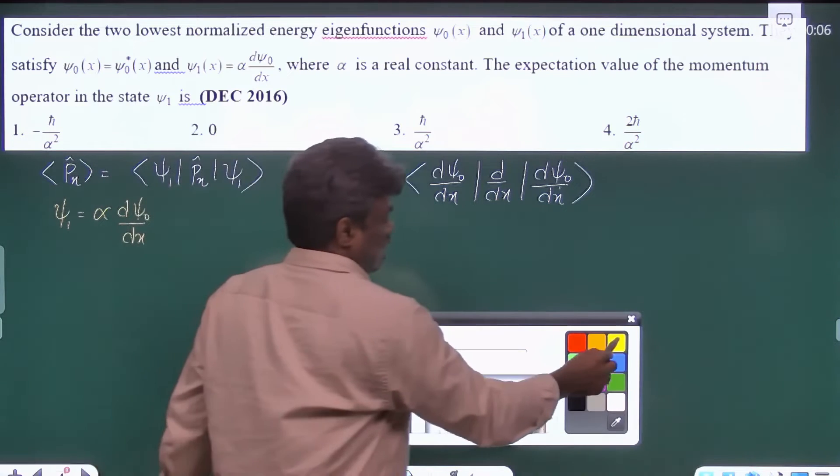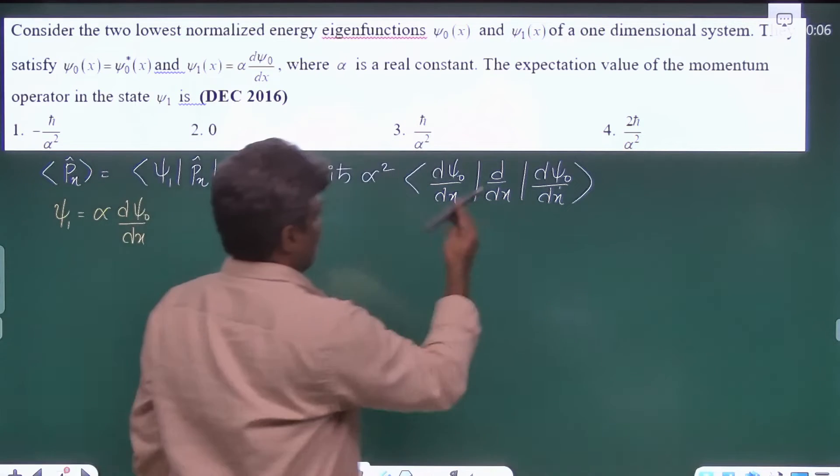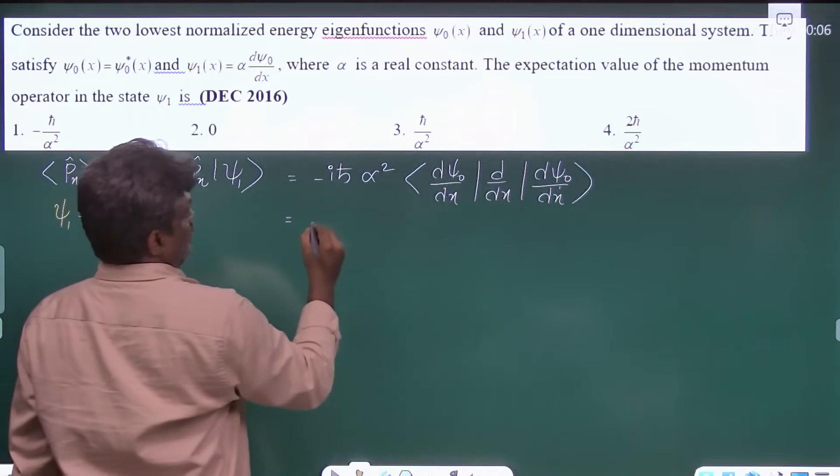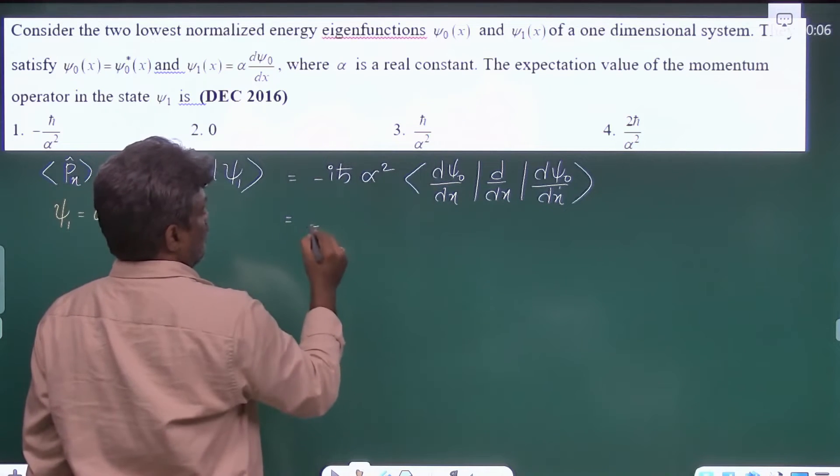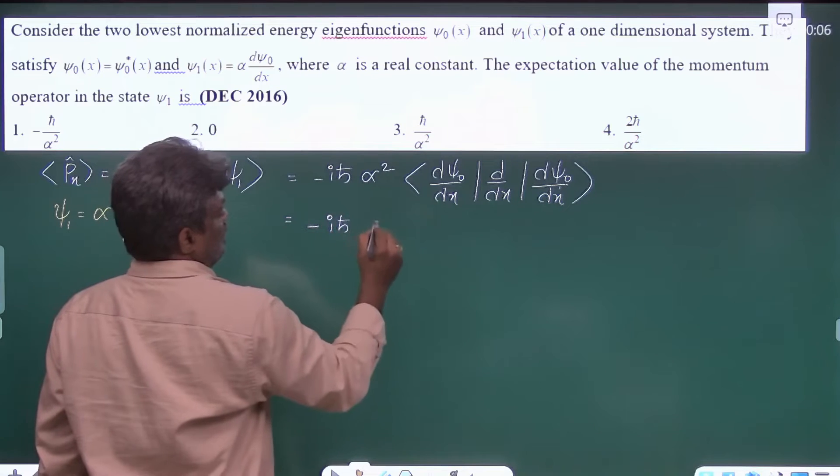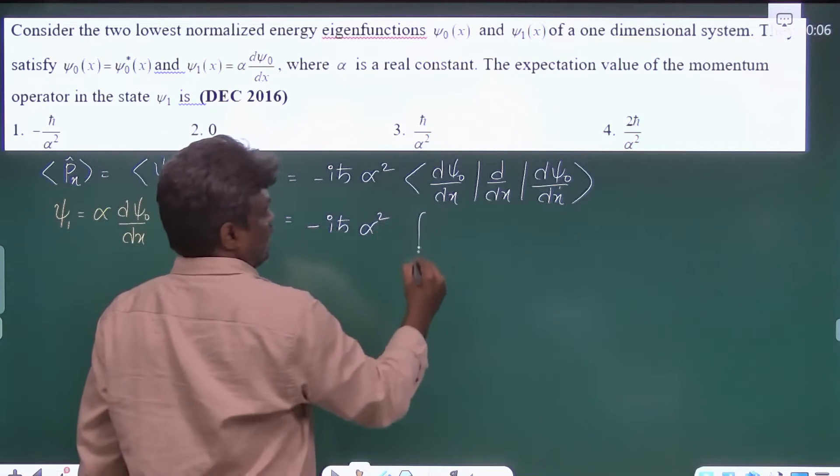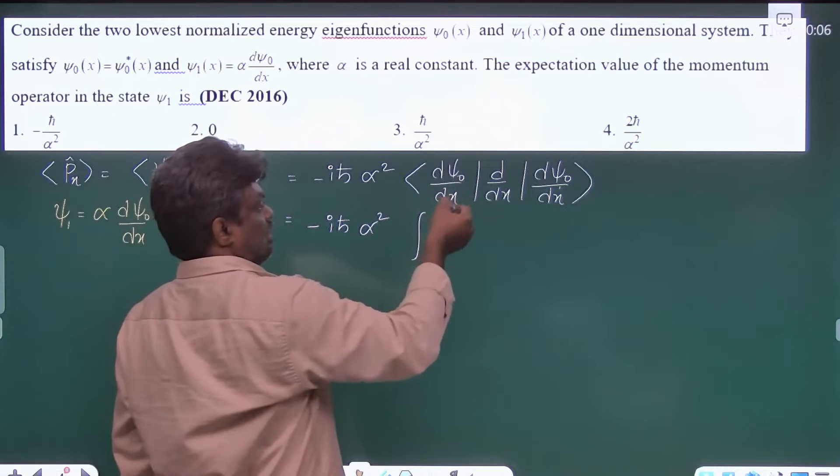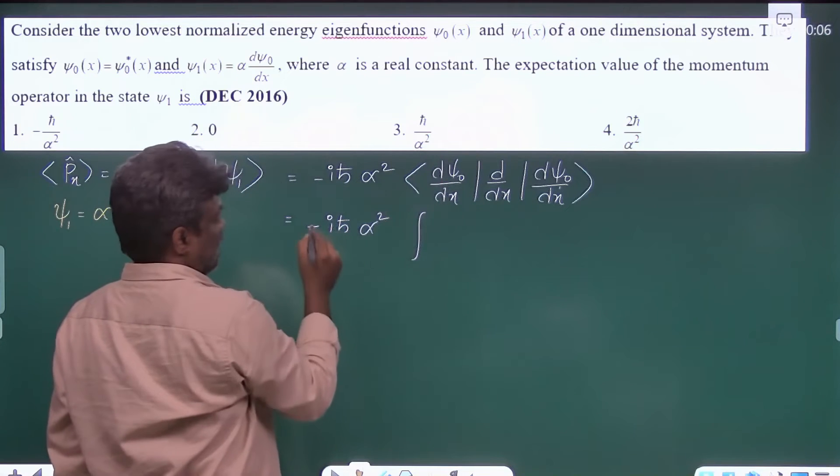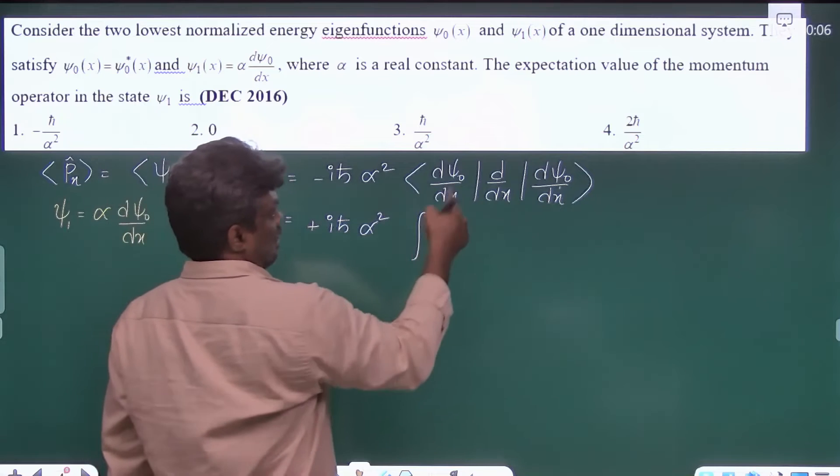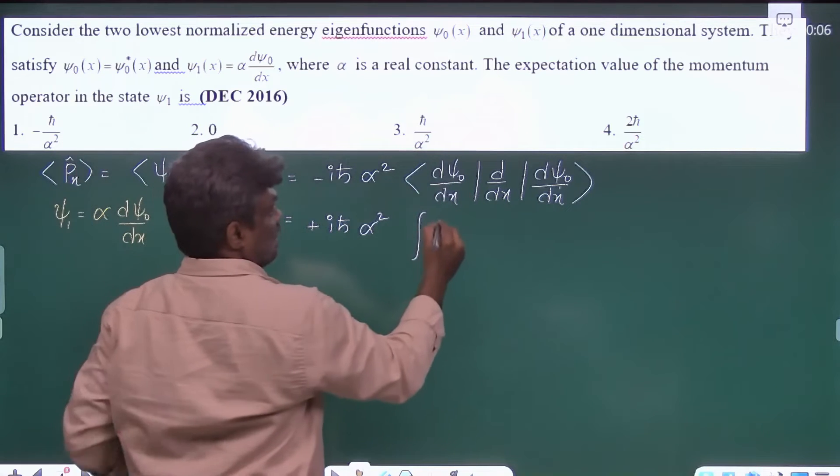So now let us take the integral form. If you take the integral, this will be minus ih cross alpha square integral. This is in the bra vector. If you take the complex conjugate, that d by dx here you will get a plus, and psi0 is already given as real, that's why